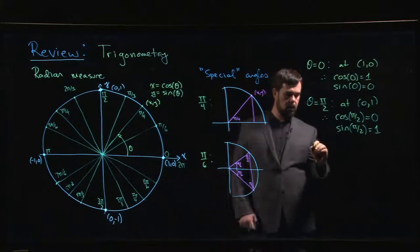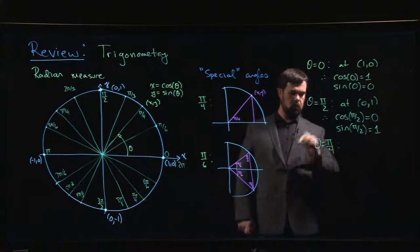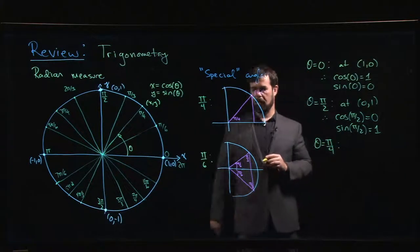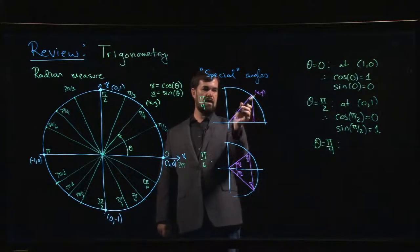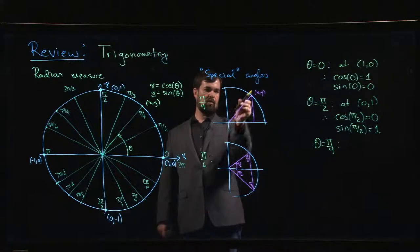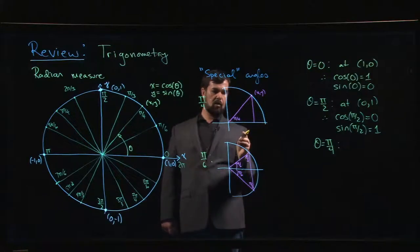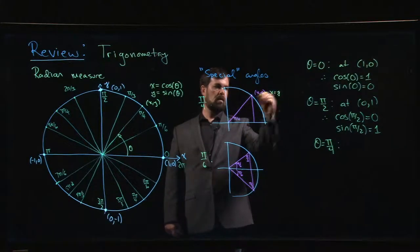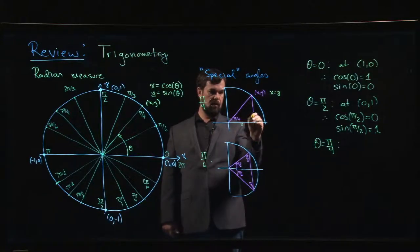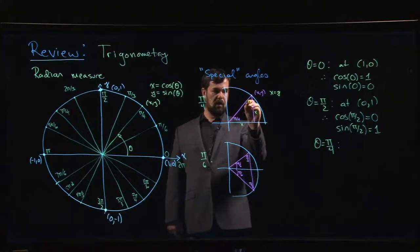Now, what about when theta is equal to pi over 4? Well, pi over 4 is right in the middle. It's this one that splits it in two. And so there's some symmetry there. You have the same amount on this side as you do on that side to say that in this case, x is equal to y. So we have a right-angled triangle, which is in fact an isosceles right-angled triangle.